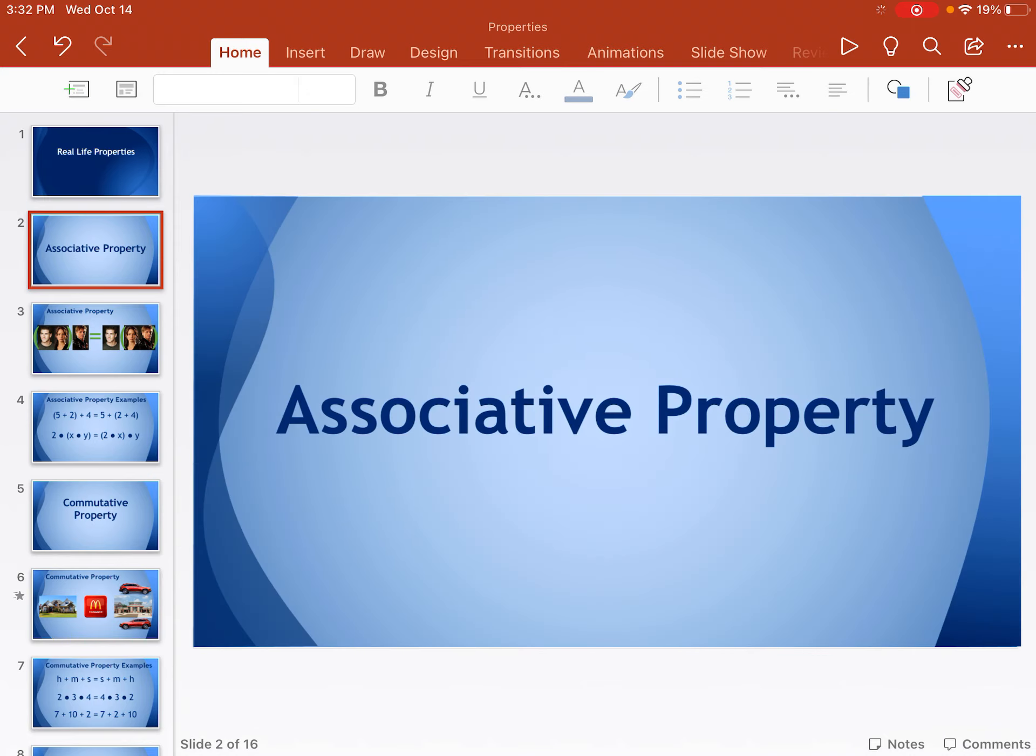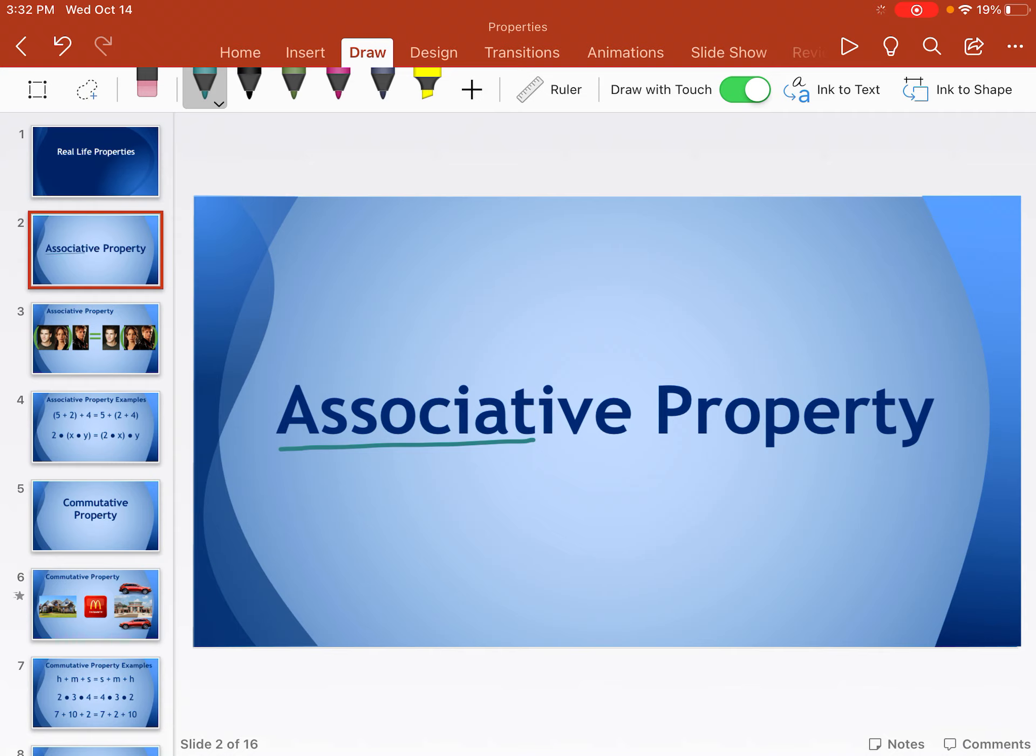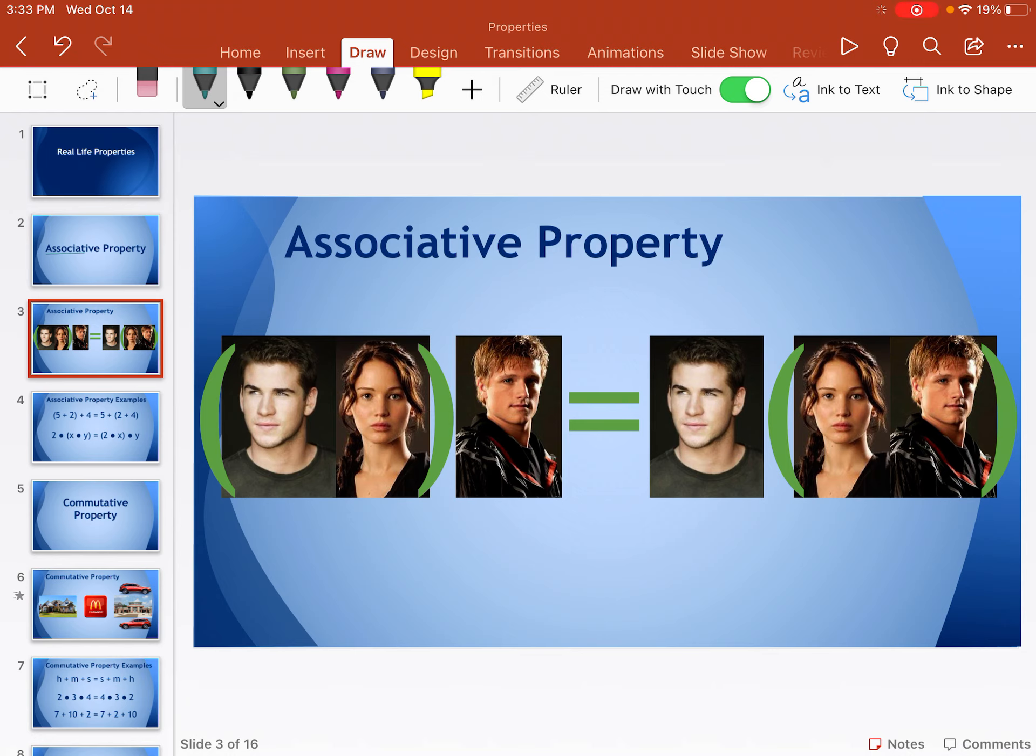Starting with associative property. So a couple things. Number one, this has the word associate in it. So an associate is like your friend, or the people you associate is your friends, your groups that you're in. So that is what this whole property is about. One thing that you could write down to help you remember is that associate is who you associate with. Those are your groups, the people you work with. Here's how I remember it though. I always call this the love triangle. That's what I would write in my ways to remember. And the best love triangle I could think of was from the Hunger Games. So we have Gail and Katniss and Peta.